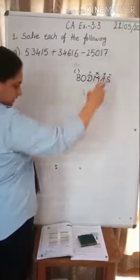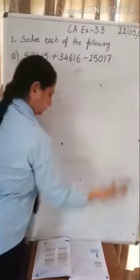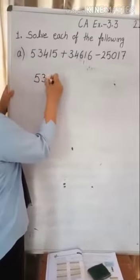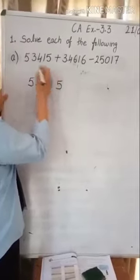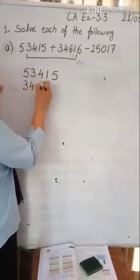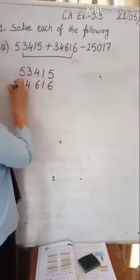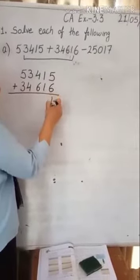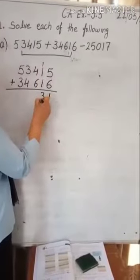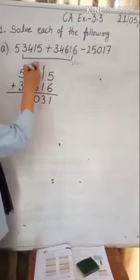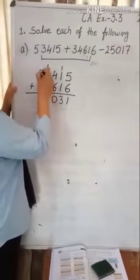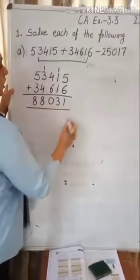Now we will write 53,415. We will find sum of these two: 34,616. 5 plus 6 is 11, write 1, carry 1. 1 plus 1 is 2, and 1 is 3. 4 plus 6 is 10, write 0, carry 1. 4 plus 3 is 7, and 1 is 8. 5 plus 3 is 8. The sum is 88,031.